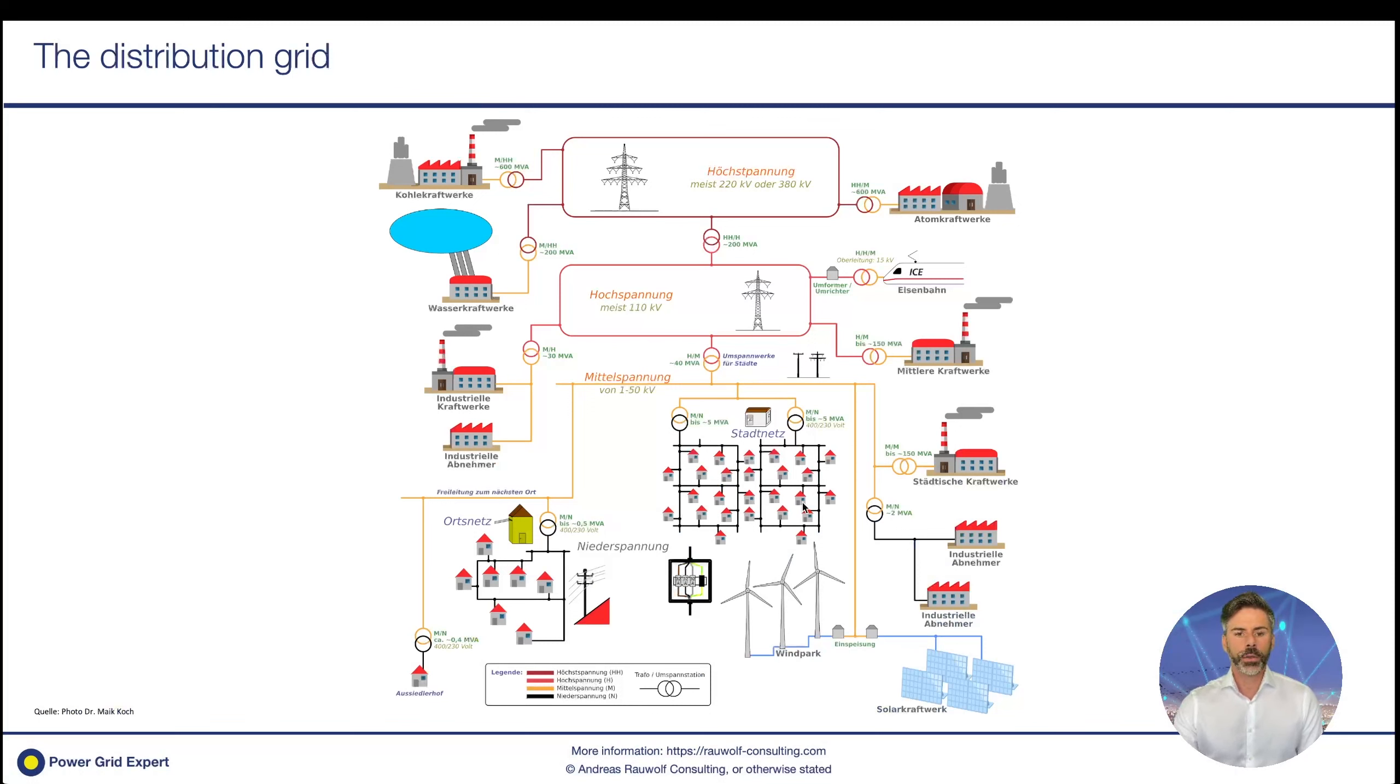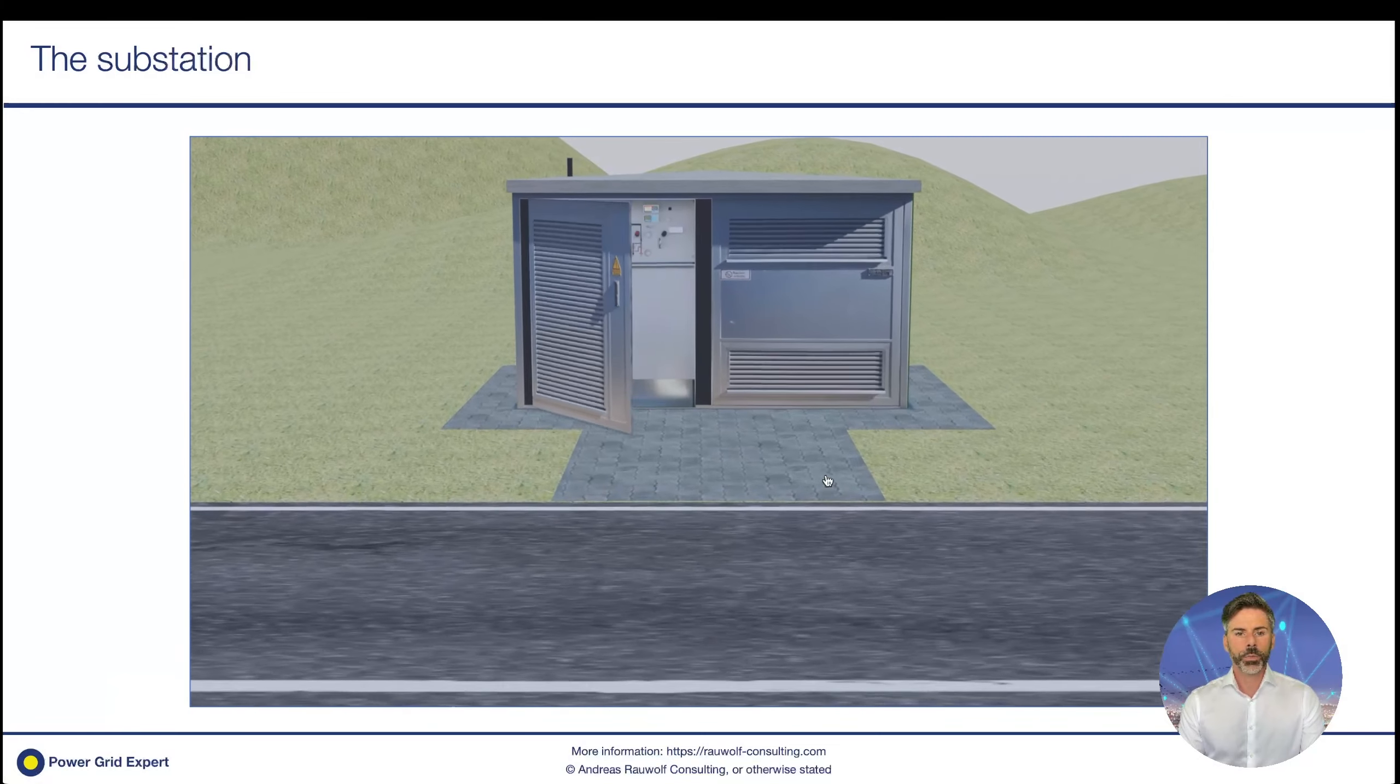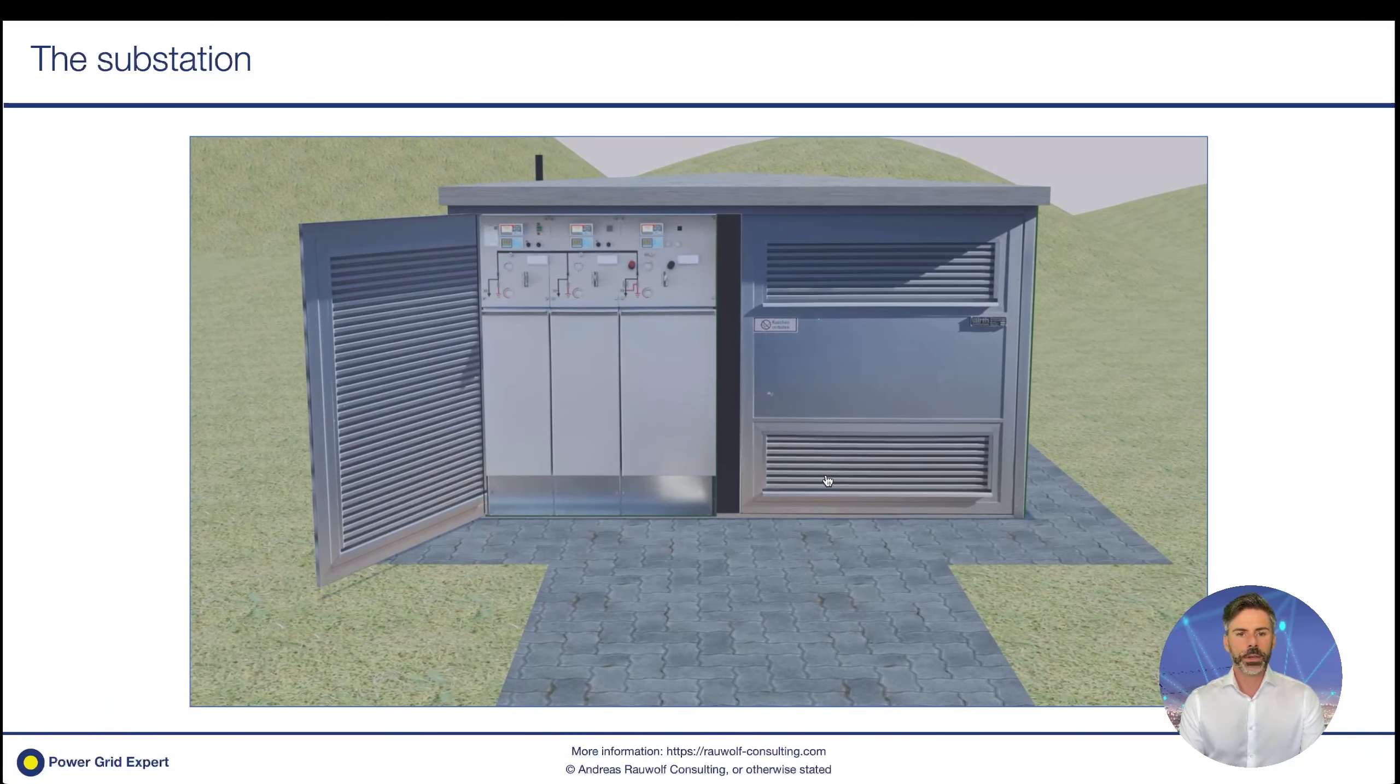Let's start and see what we are talking about. We are talking about the distribution grid, the voltage levels between 1 and 50 kV. Especially here, we're talking about the substations, which are these small little houses you see on the corner or on the side of the street. Inside these substations, there is a medium voltage switchgear, the transformer, the low voltage compartment, and so on.